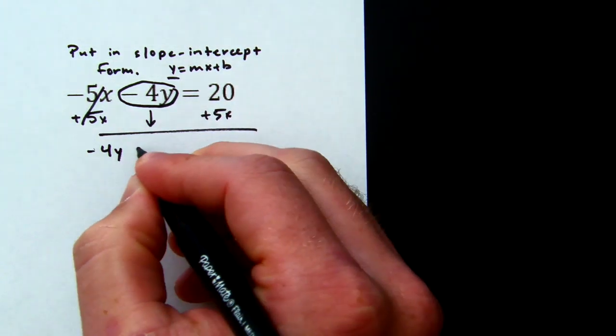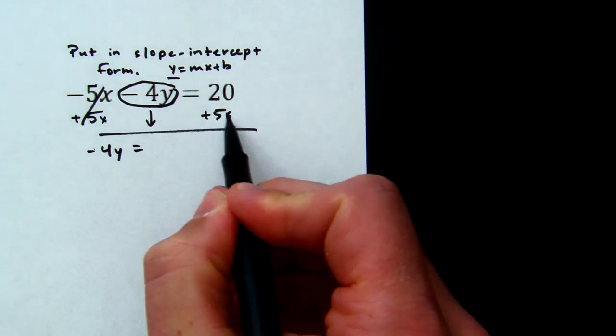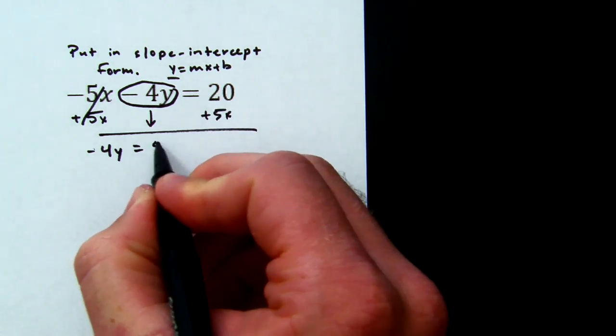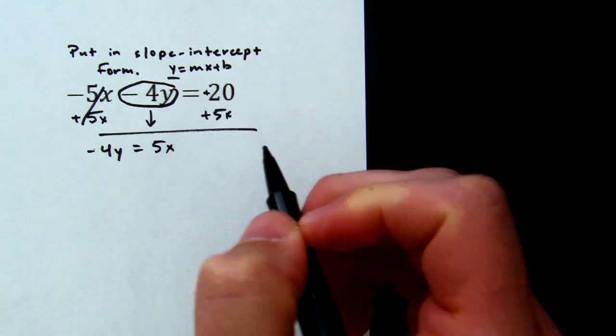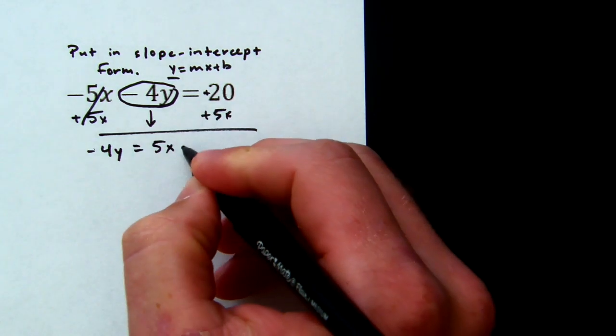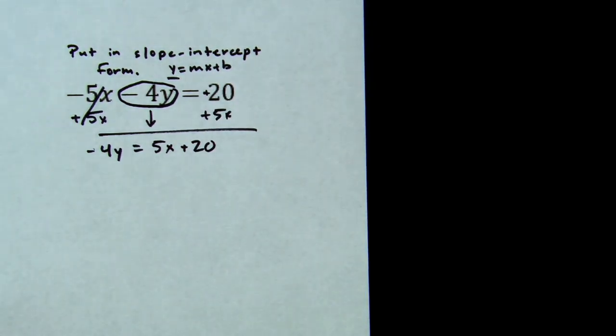So -4y equals, we're going to write the x first. And what we're going to do is keep the sign up front, so positive 5x. And in front of this 20 is just an invisible plus sign. So we're going to say plus 20 because we want x first when we talk about slope-intercept form.